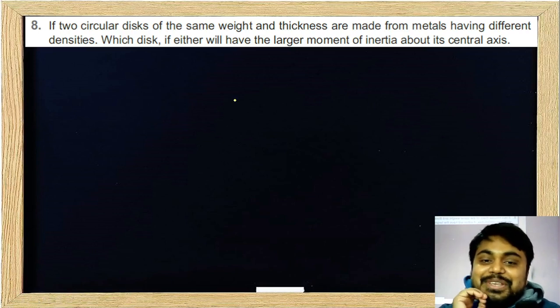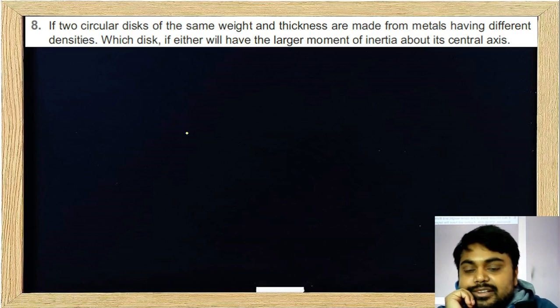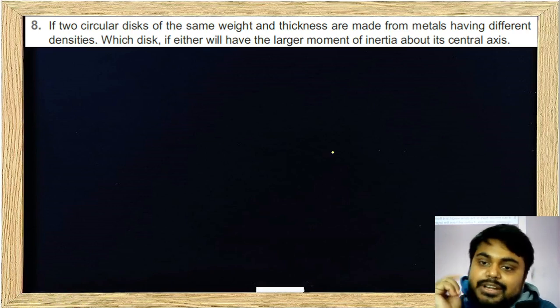Two circular discs of the same weight and thickness are made from metals having different densities.